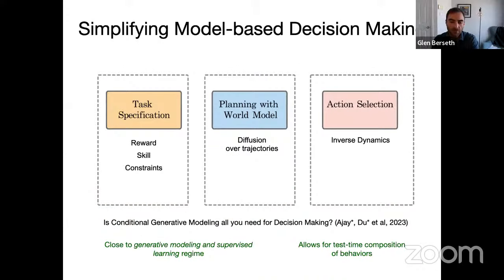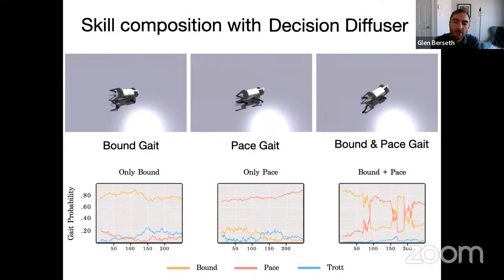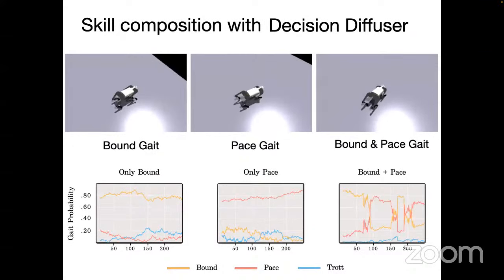Question: how are the models combined — are you literally combining action outputs from both? No. Each model predicts a denoising prediction, and to combine two models you add the two denoising predictions together. Mathematically, this is equivalent to taking the product of the two distributions.